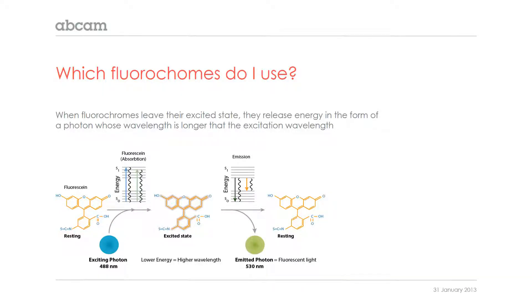Fluorochromes all basically work on the same principle in that we excite the fluorochrome by a laser, and this laser should be roughly in the area of the maximum extinction coefficient of the fluorochrome. Once the electron goes into the higher orbital, which is quite unstable, it will then go back to the stable orbital. Within this process, there's a certain amount of heat dissipated, and this is consequential in that the excitation wavelength and the emission wavelength of the photon falling back down to the more stable configuration will always be a longer wavelength than the excitation.